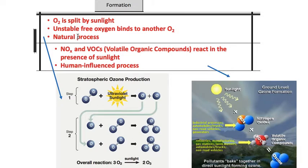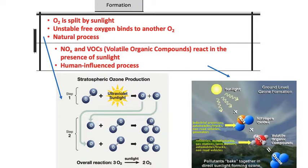That's a natural, good process. But NOx and VOCs — volatile organic compounds — react in the presence of sunlight, and these are produced mostly through human processes. NOx has some natural sources, but the nitrogen oxides and VOCs that come from refineries, manufacturers, gas stations, lawnmowers, and everything that we burn — when they combine, they form ozone at our ground layer, which contributes to smog and causes those respiratory effects.